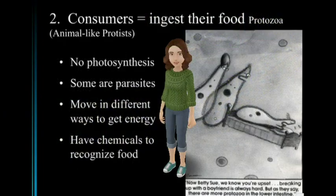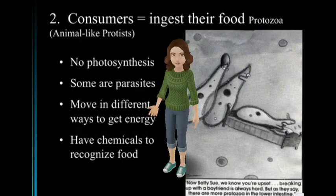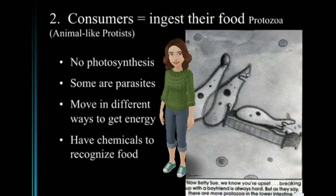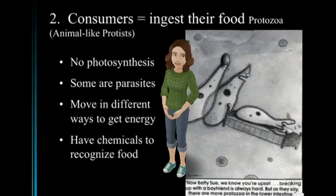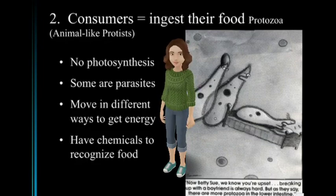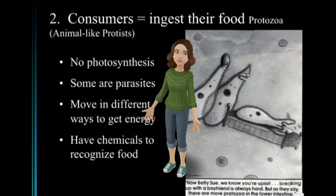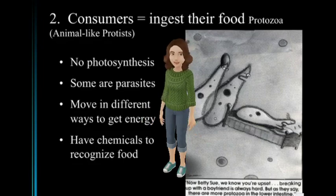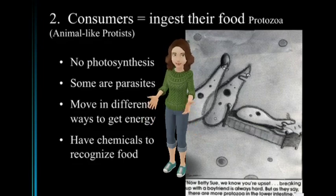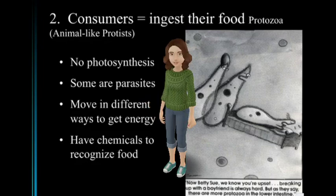The second group of protists we're going to talk about are the animal-like protists. They are consumers. They have to ingest or eat their food in order to get energy, so these protists don't do photosynthesis. Some are parasites, and they move in different ways to get their energy, which is how they are named. They all have chemicals to recognize their food sources.